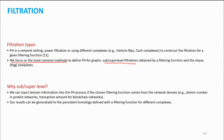In sub/super-level filtration, we only work on node activations, so the network doesn't get too connected even as you increase the filtration. Using sub- and super-level filtration, I was able to run persistent homology on 20,000-vertex graphs. Another important thing is that sub/super-level filtration lets us inject domain information into the process — for example, if nodes represent elements, we can use atomic weights as node activation values. Our results can also be generalized to persistent homology defined with different filtering functions and complexes.